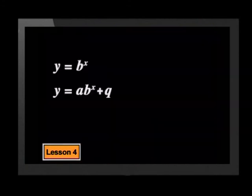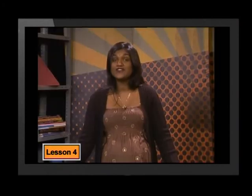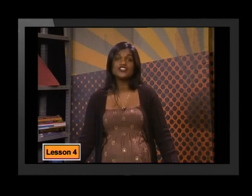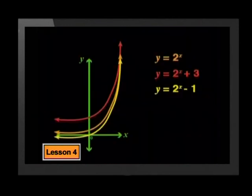So far we have looked at several graphs to see what the effect of the a-value is on exponential functions of the form y equals a times b to the x plus q, but throughout the investigation we have kept q equal to 0. If we change the q-value of this function, what effect do you think it will have on the parent graph? In all the other graphs we have studied, the q-value has shifted the parent graph up or down by q units, and this is also true for the exponential function. Have a look at the following graphs.